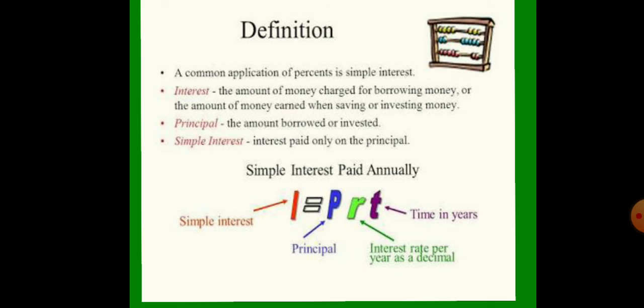Simple interest paid annually equals I = PRT, where P means principal, R means interest rate per year, and T equals time in years.